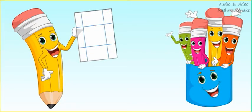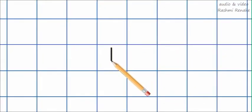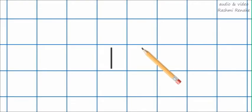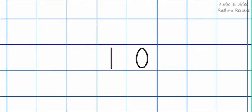So, let's start. In the first box, keep your pencil like this — a standing line like this. Now, in the next box, keep your pencil like this — make a circle like this. This is number 10.